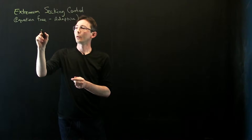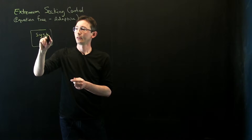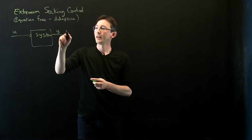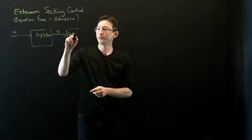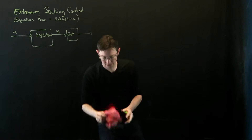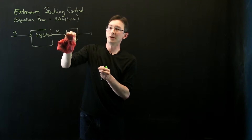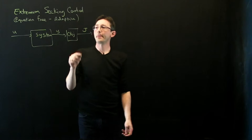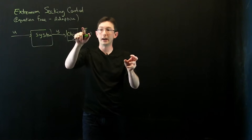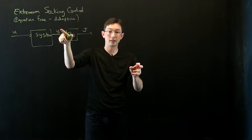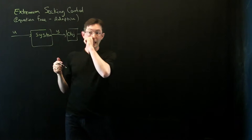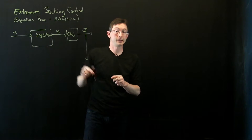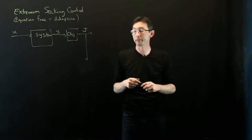In general, we're going to assume that we have some kind of a system. The system has inputs u and outputs y, and those outputs feed into an objective function j — I'll call it an objective function because I want to maximize it, not minimize a cost. I'm assuming that if I move u I can get a measurement of j, and then extremum seeking control feeds back that measurement and does something to optimize u to maximize j.